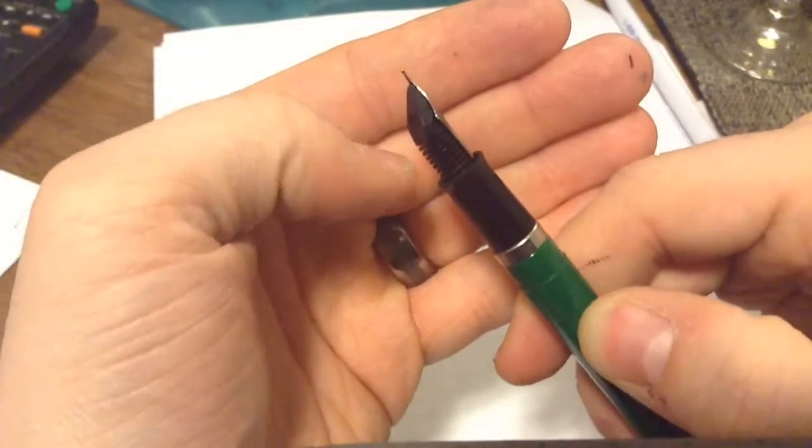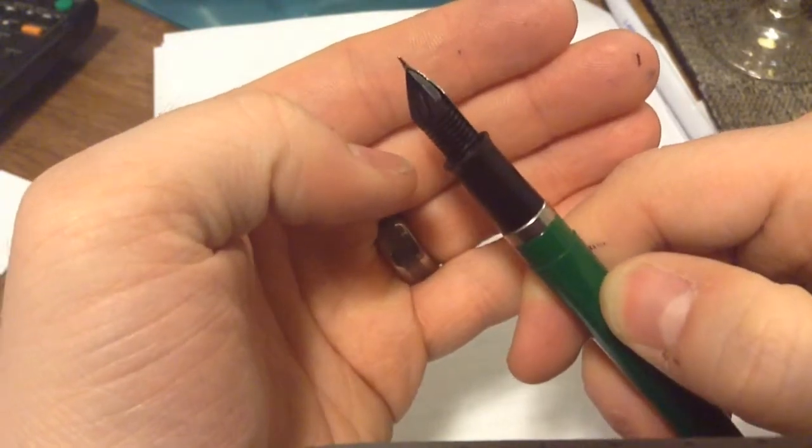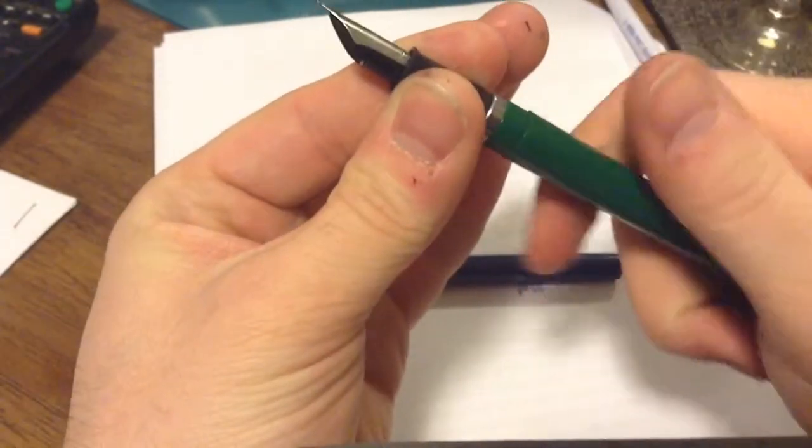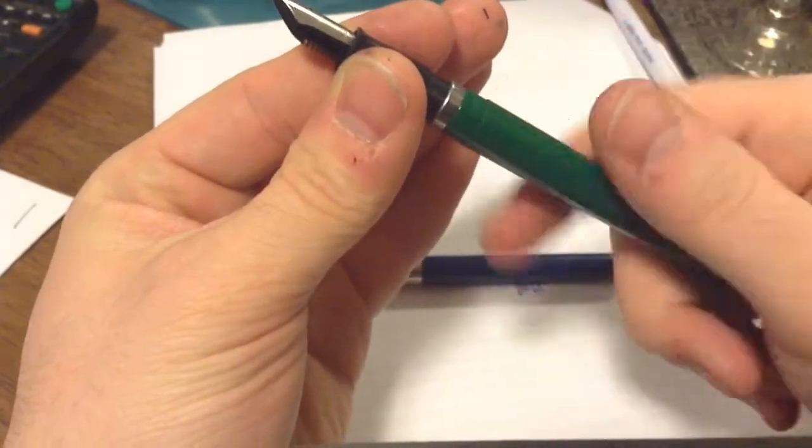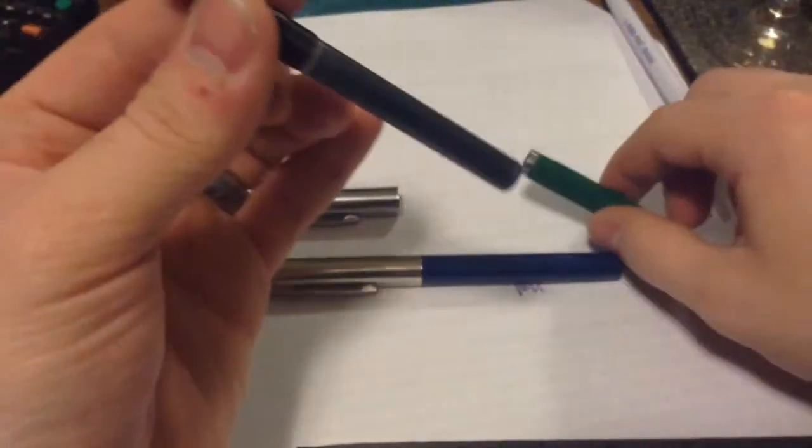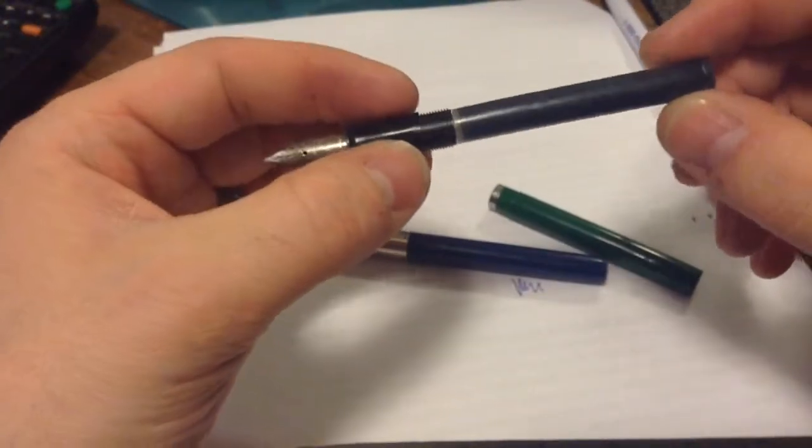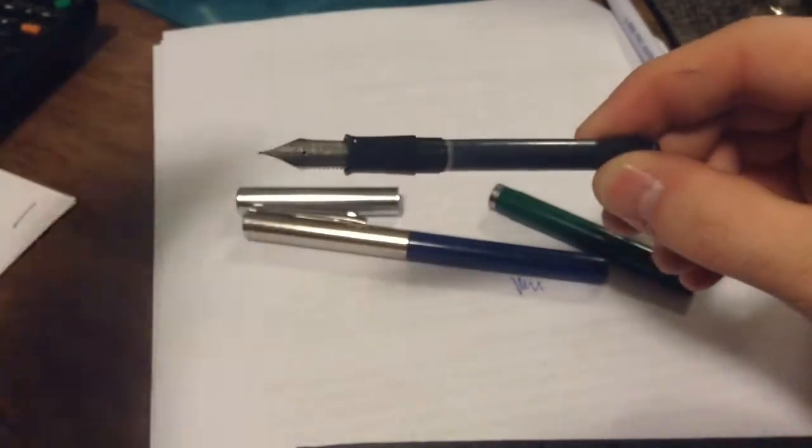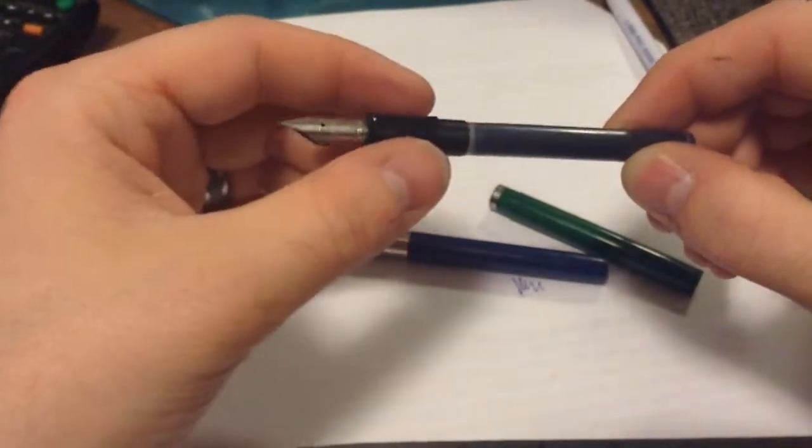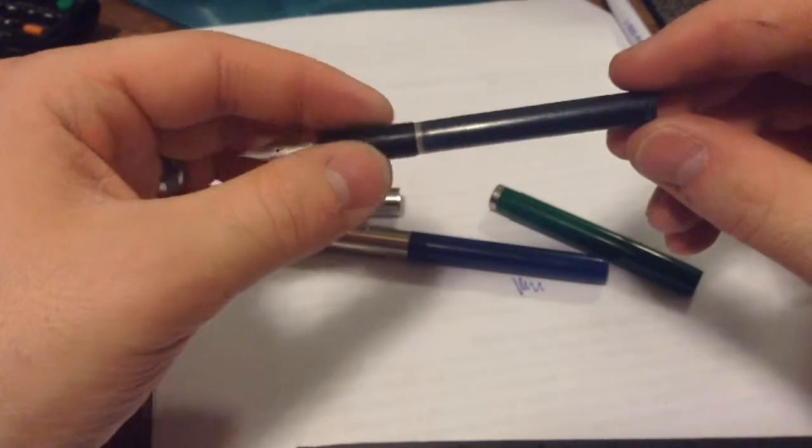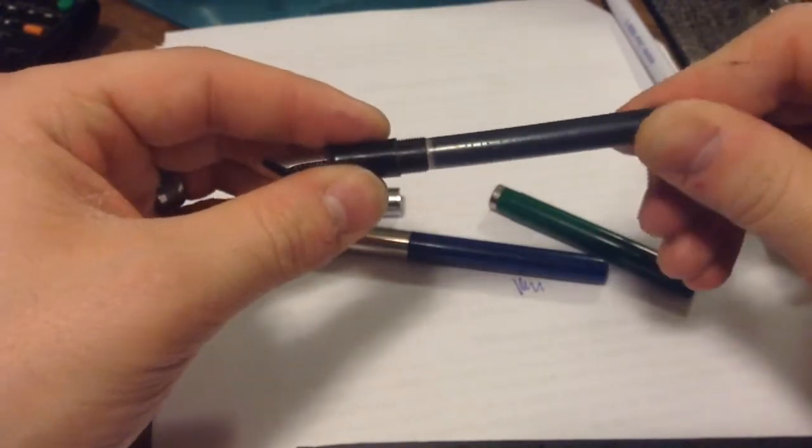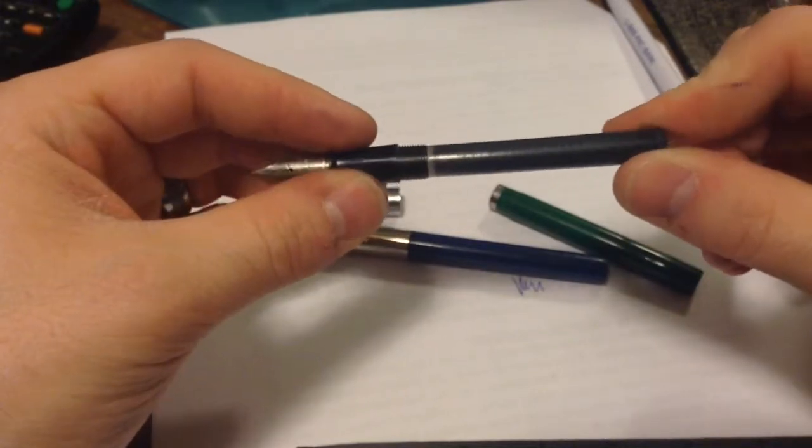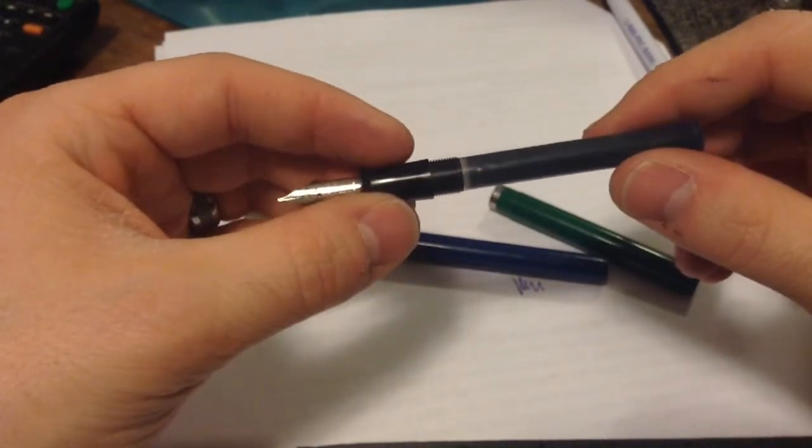And right underneath the nib there is what's known as a feed. And what that does is in these fountain pens, the students have a cartridge. And some of them have cartridges you can use, which are standard across the board. Or you have what's called a cartridge converter. So you can use different inks and basically personalize your writing.